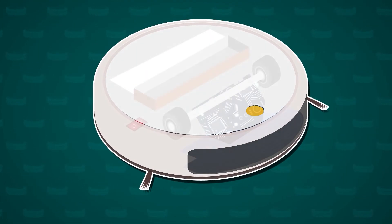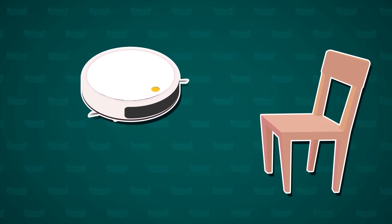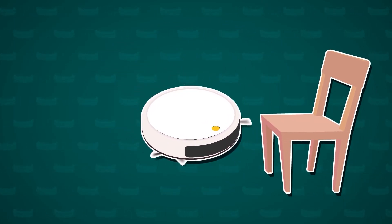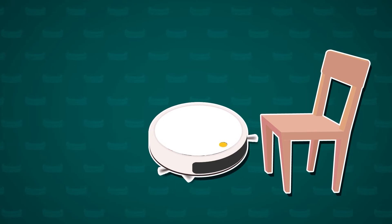Inside the robot is a set of algorithms, which act as its brain. These algorithms process the data from the sensors to plot a cleaning path. If Leo places a chair in its way, the robot recalculates its route on the fly.